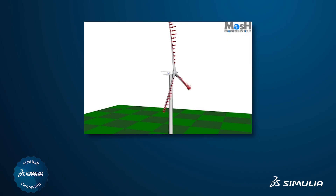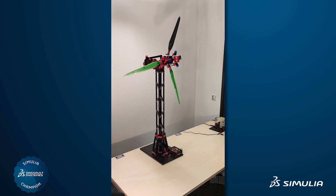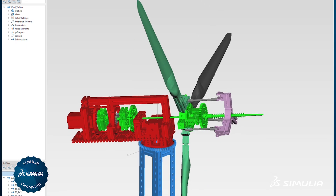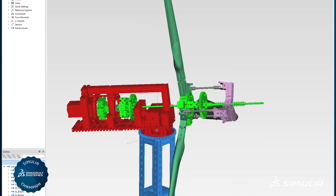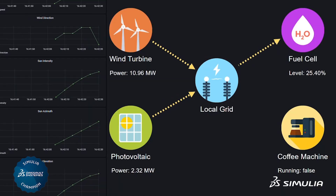A digital twin is a digital representation of a physical asset. We use it especially for wind turbines and their components, but also on higher levels — on a wind farm level, on the grid level — and this digital twin makes it possible to look into details.